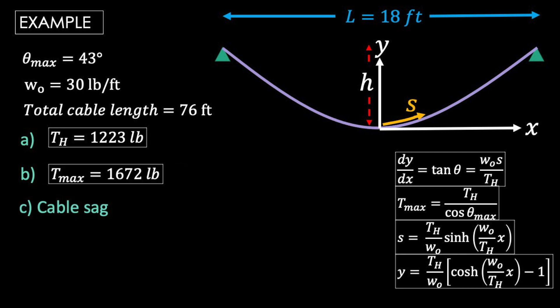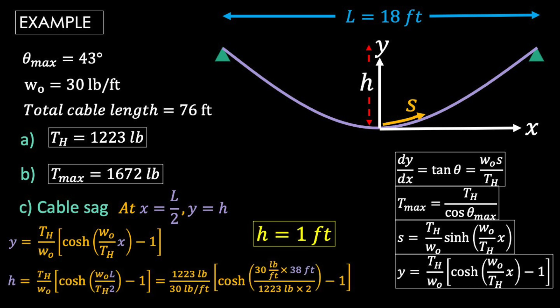The last thing we're looking for is our cable sag. That's our h value. We're going to use our last relationship with a boundary condition. With our coordinate system, when x is equal to half the span length, our y value is equal to h. Now we can plug those into our equation and solve. We get that our cable has a sag of one foot.